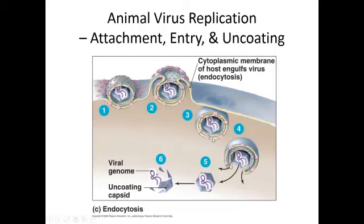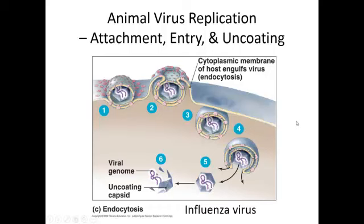Some viruses, both enveloped and non-enveloped, trick the cell into endocytosing them. The virus attaches to the receptors on the cell, the cell endocytoses it, and it goes into a phagosome. Most of the time, before a lysosome can fuse with the phagosome and destroy the virus inside, the virus causes either fusion of its envelope with the phagosome and pops out, or it causes lysis of the phagosome. In any case, the capsid with the genome ends up in the cytoplasm, and we have to undergo uncoating because we can't transcribe the genes on the viral genome if it's covered up with protein. An example of an enveloped virus undergoing this would be influenza; an example of a non-enveloped virus would be adenovirus.